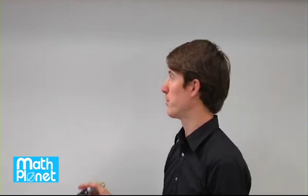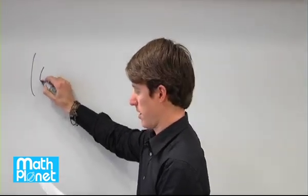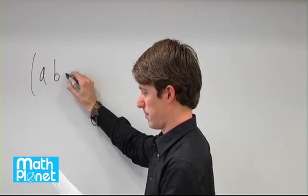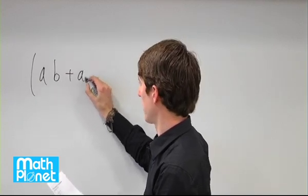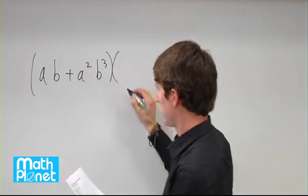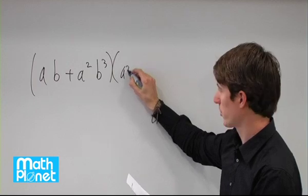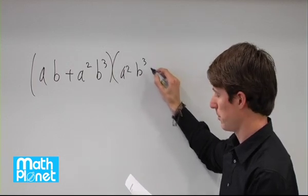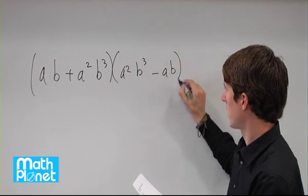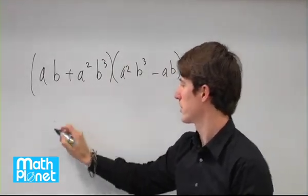We need to find the product of these two polynomials. We need to write a times b plus a squared times b cubed, times the quantity a squared times b cubed minus ab. If we multiply this out, we'll do these first.